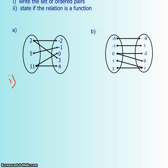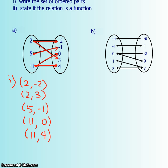So let's just talk about it a little bit. Let's write out all of the different coordinates. So first one, starting here, going there, first coordinate is 2 and negative 2. Then we're going to go here to here, that's 2 and positive 3, starting at 5 and going there, 5 and negative 1, and then 11 goes to 0 and it goes to 4. So those are all my coordinates.